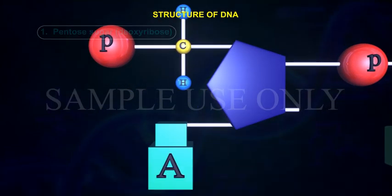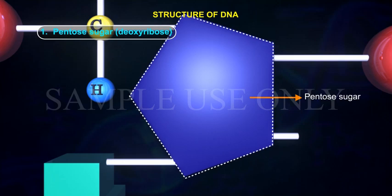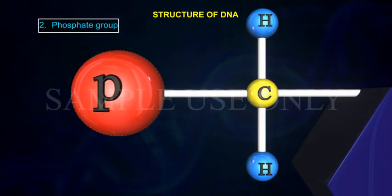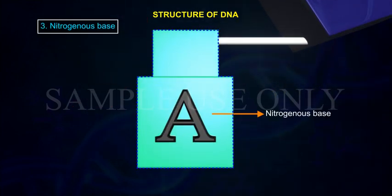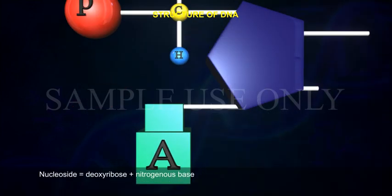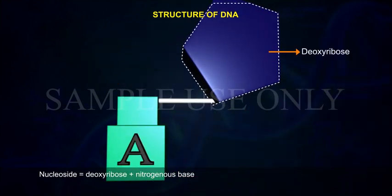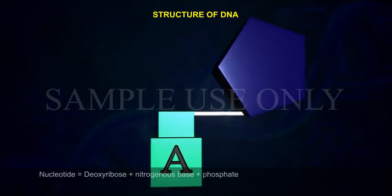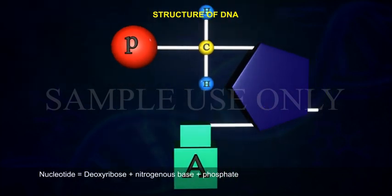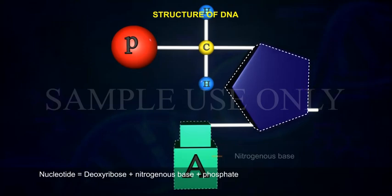They are: 1. Pentose sugar - Deoxyribose, 2. Phosphate group, 3. Nitrogenous base. Nucleoside means deoxyribose plus nitrogenous base. Nucleotide means deoxyribose plus nitrogenous base plus phosphate.